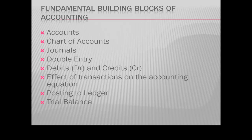The general ledger is where the details of every single account are stored in order, like the chart of accounts, except we record all the transactions for each account there. From there, we take the closing balances of the ledger accounts to produce the trial balance.